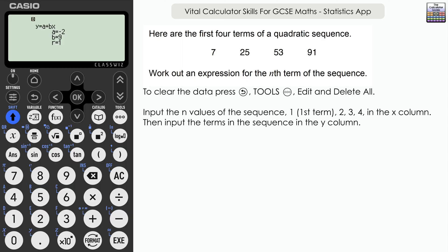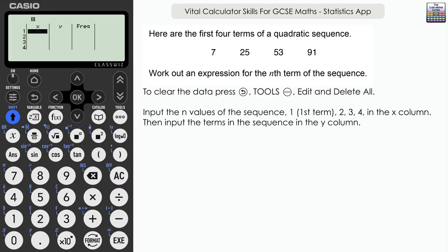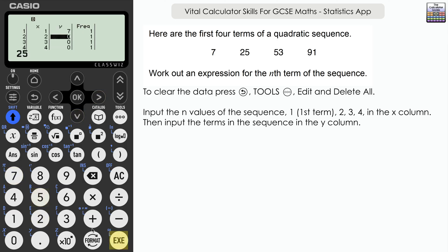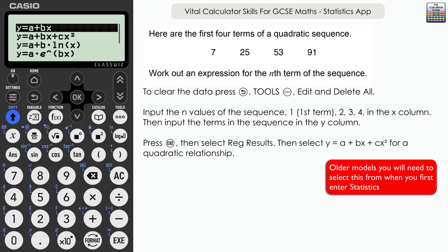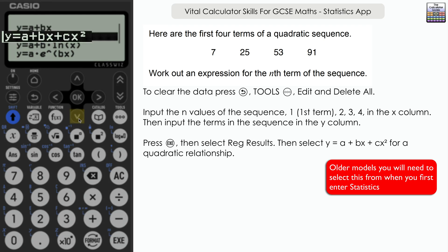Now for the nth term of a quadratic sequence. Input 1, 2, 3, 4 for the term positions and the sequence values 7, 25, 53, 91 in the Y column. With older models, choose the relationship type before inputting. Press execute when done, then go to reg results. This time select the second option, which represents a quadratic.